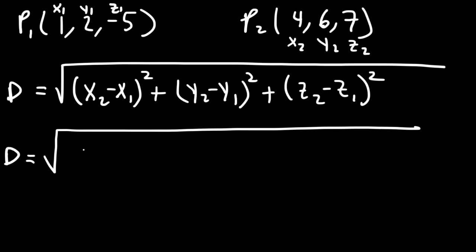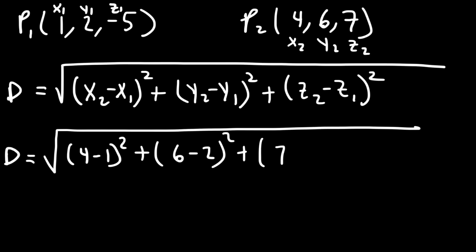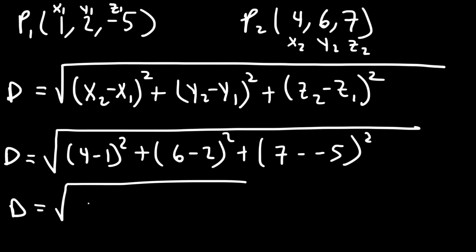So x2 is 4, x1 is 1, y2 is 6, y1 is 2, z2 is 7 minus z1 which is -5. So we have 4 minus 1 which is 3, then 6 minus 2 which is 4, and 7 minus negative 5 — that's 7 plus 5 — which is 12.